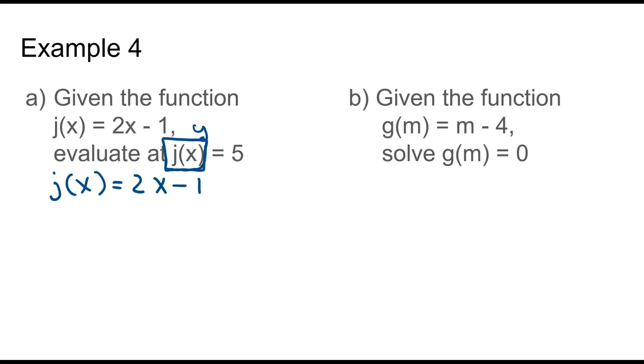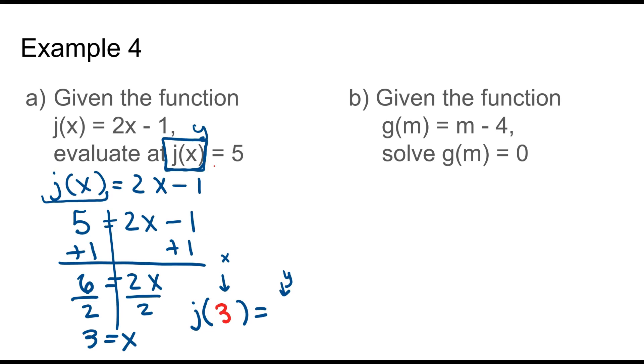And then j of x is 5, and they want you to find x. So 6 is equal to 2x. Divide both sides by 2. 3 is equal to x. And remember, we want to write it in proper notation. So let's go back. This is our x, and this is always our output, or our y. Our x is 3, and our output is 5. So j of 3 equals 5.